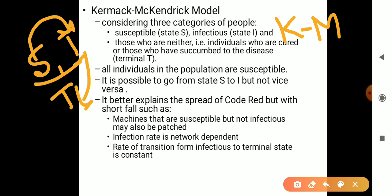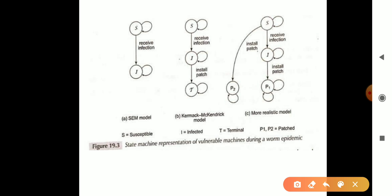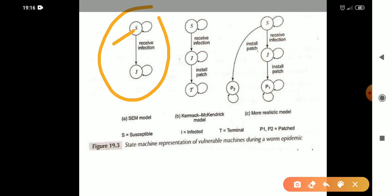The best example for this one is explained in this diagram. You can see here this is the simple epidemic model where S is suspected and I is infected. So they have been receiving the infection. Now in the KM model, you can see there are three states: S, I, and T.